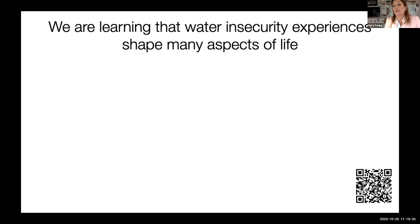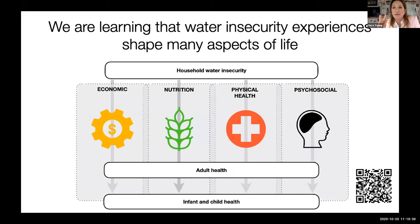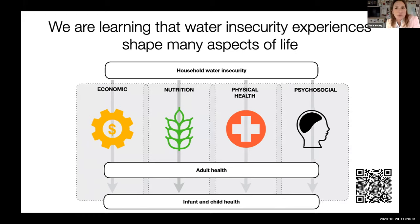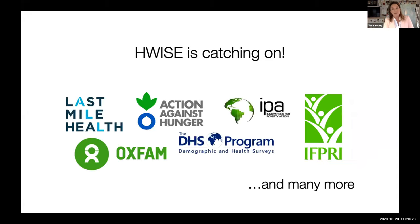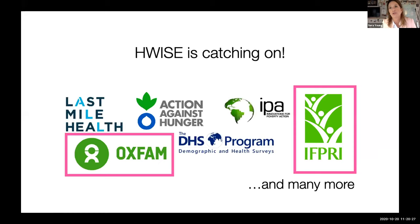We're learning a lot about water insecurity experiences and how they shape many aspects of life. We're seeing fascinating relationships between water insecurity and food insecurity — they're strongly related, and we have some of the first panel data showing that water insecurity can actually predict food insecurity. There are strong relationships with physical health, like resilience to cholera, diarrhea, and injuries on the way to fetch water. Probably the strongest data is on how water insecurity is so strongly associated with depression, stress, and anxiety — it's a huge mental burden. A number of agencies are taking H-WISE up, for example, IFRC is using it in an eight-country longitudinal survey of how COVID is affecting people, and Oxfam has used it to assess a program in Sierra Leone.